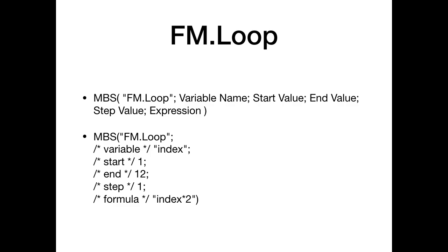We got a loop function. In a FileMaker script I often write code for a loop — it's always the same six or seven lines. Instead, we got this loop function to count up a variable from a start value to an end value with a given step. It can count backwards if needed, will run the given formula as many times as requested, and there's an exit condition parameter so you can exit early if something goes wrong. So if you need to run a plugin function 20 times or build a list by calling a FileMaker function, you can do that here.